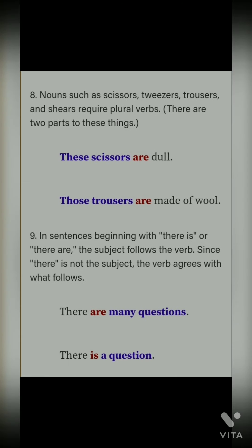Eighth point: nouns such as scissors, tweezers, trousers, and shears require plural verbs. Inke saath plural hi lagega. For example, 'scissors' ka matlab zyada scissors nahi — 'bring me a pair of scissors' mein ek hi scissors hoga. 'These scissors are dull' — subject plural mein hota hai hamesha. Jaise shoes plural hai to 'shoes are' aayega, aur trousers ke saath bhi 'are' aayega.